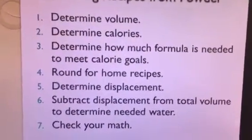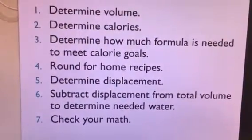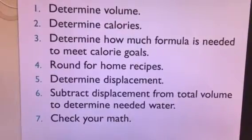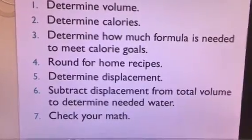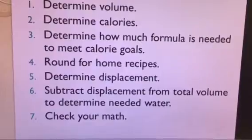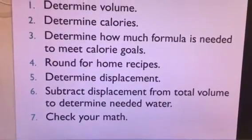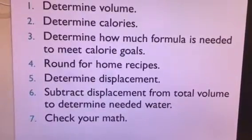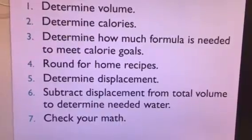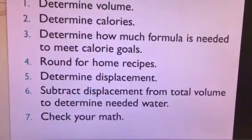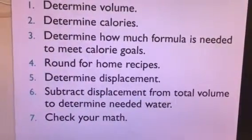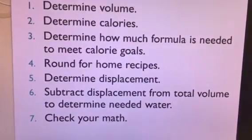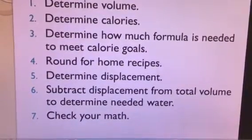So first you determine your volume, then calories, then how much formula you need. In this case it's how much concentrate, round if necessary for a home recipe. You don't have to determine displacement for a concentrate recipe. Instead you just subtract the total volume of formula concentrate from the total volume of formula you need and then finally back calculate.